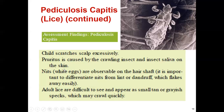Nits or eggs are observable on the hair shaft. Adult lice are difficult to see and appear as small, tan or grayish insects that may move very quickly.